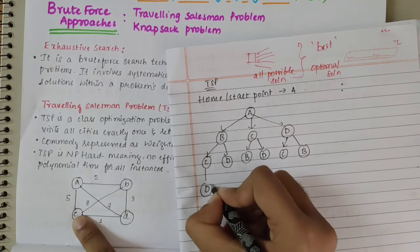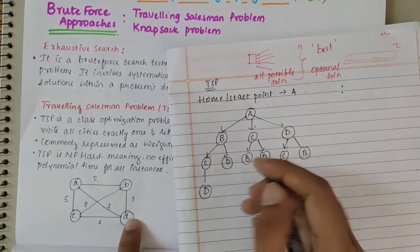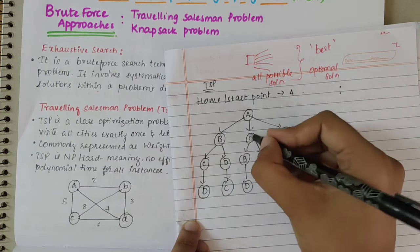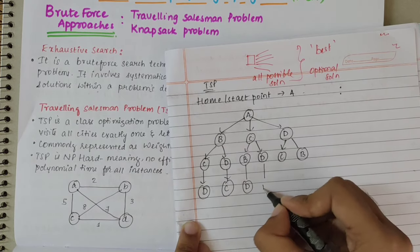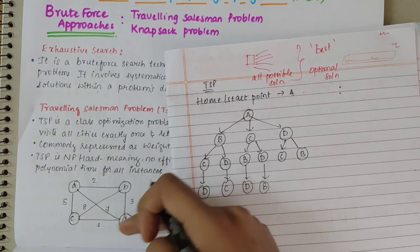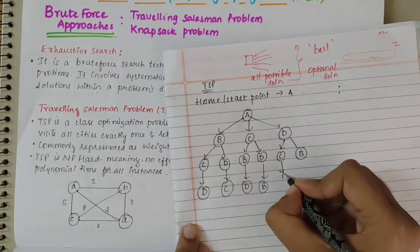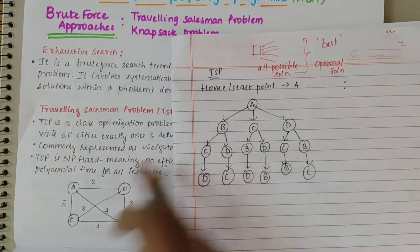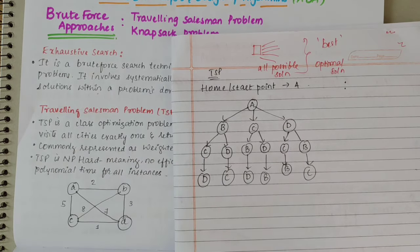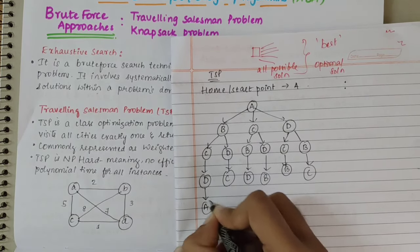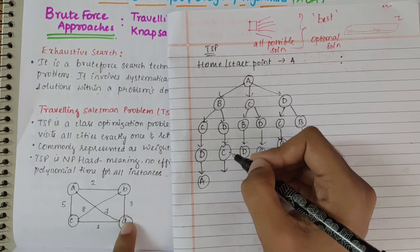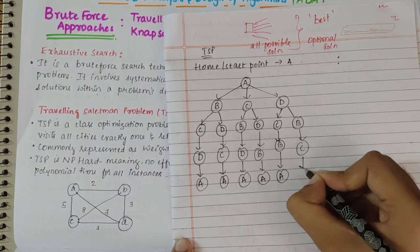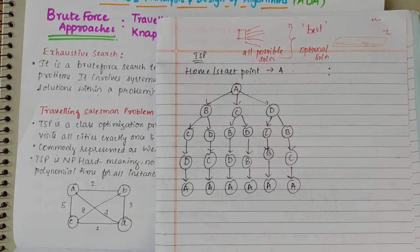By enumerating all possible paths from A visiting B, C, and D exactly once, we get the following six routes: A→B→C→D, A→B→D→C, A→C→B→D, A→C→D→B, A→D→C→B, and A→D→B→C — each ending with a return to A. These represent all possible solutions the salesman can follow.